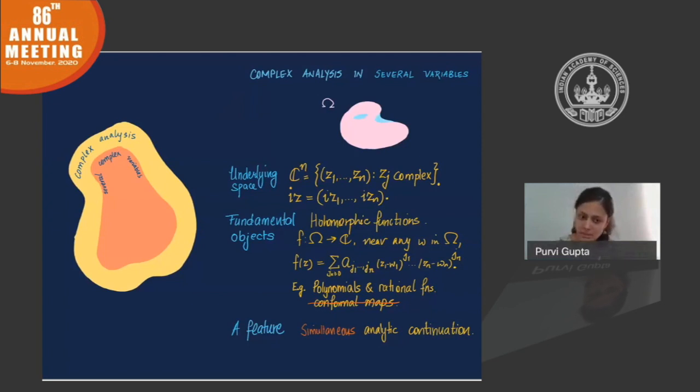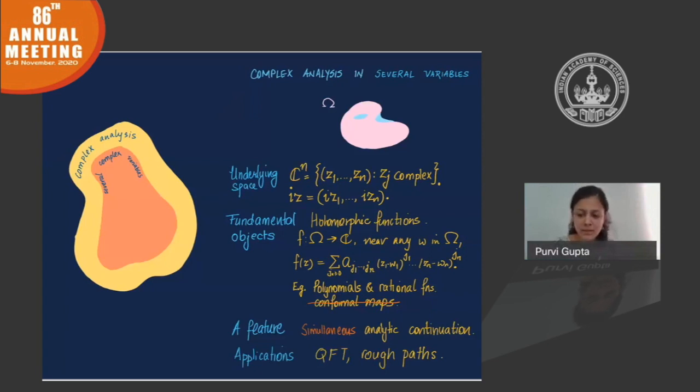Several complex variables, which is sometimes what this multivariate complex analysis is called, they have applications as well. They are more specialized. There are some classical applications in physics. But also more recently, it has found applications in stochastic PDEs in the theory of rough paths.